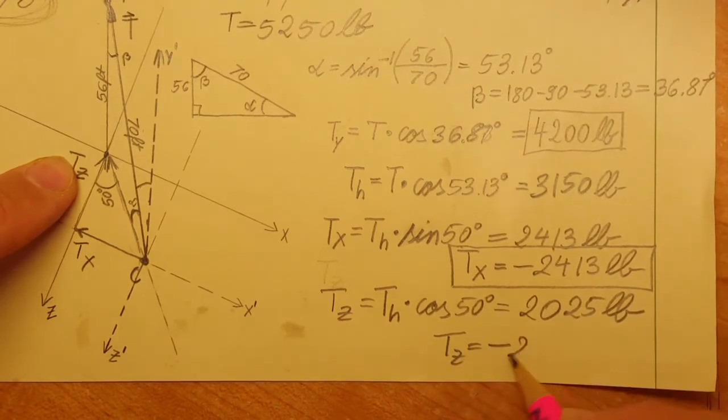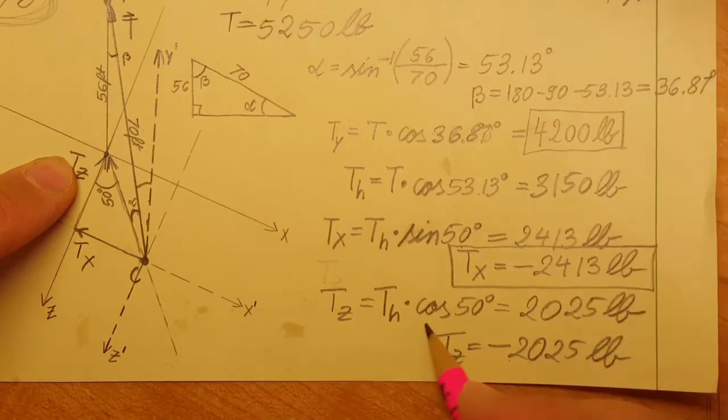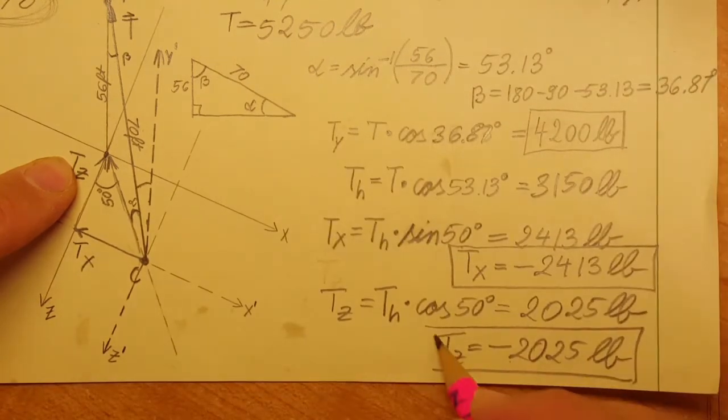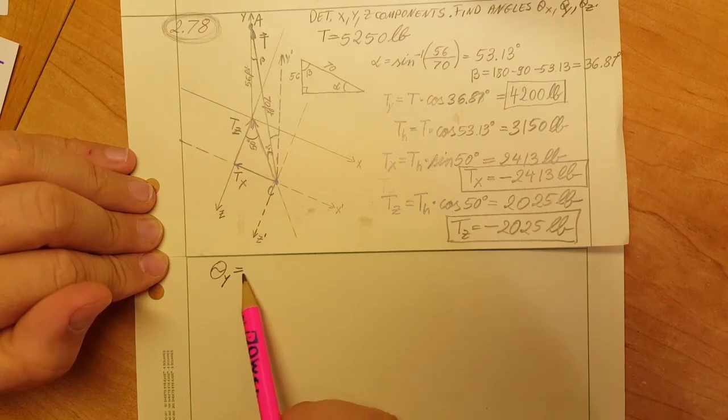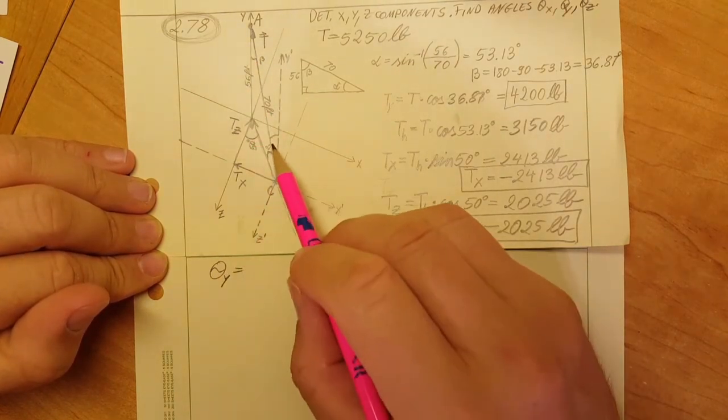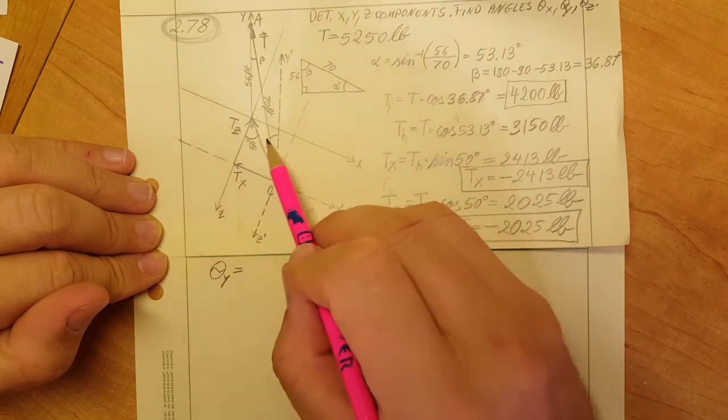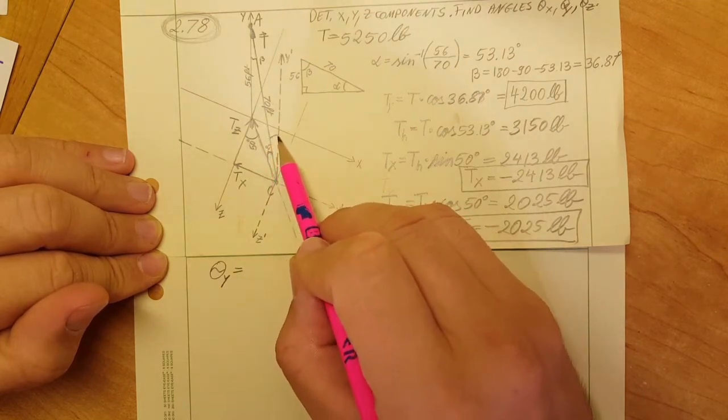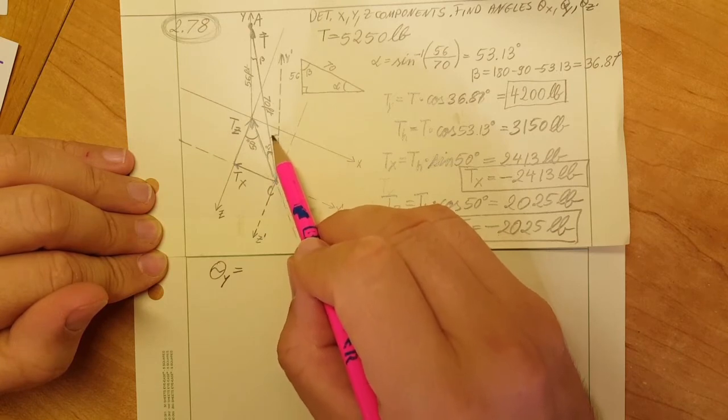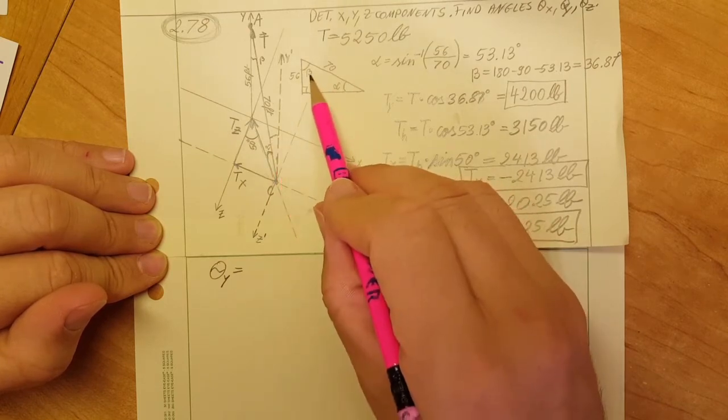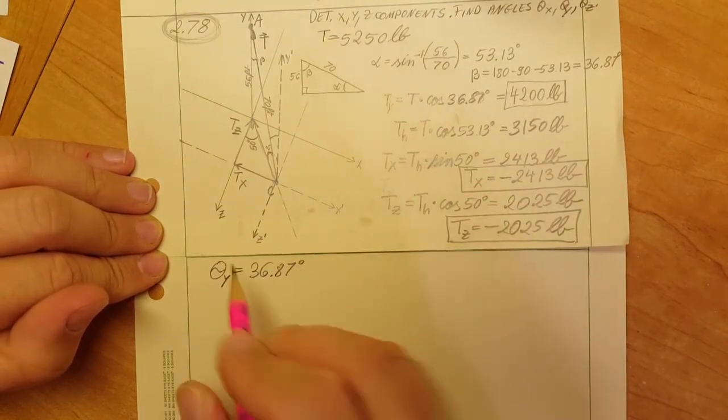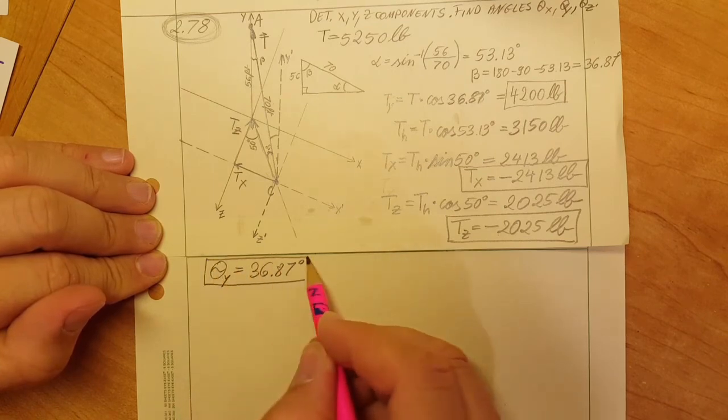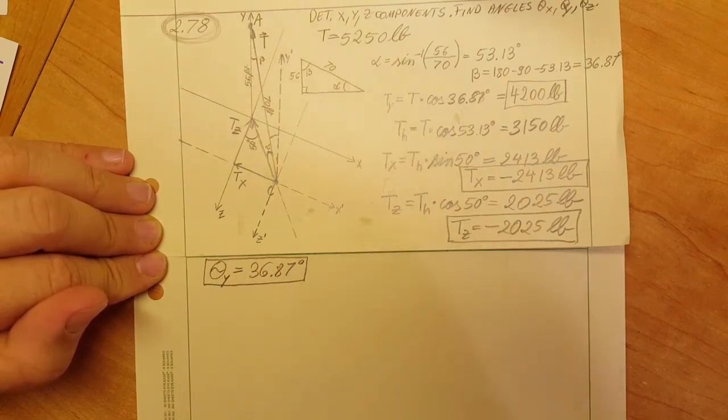We have all our components now, so let's start working on our angles. For theta of y, looking at our force that goes to the y axis, this is our beta angle which we already calculated. That is 36.87 degrees.